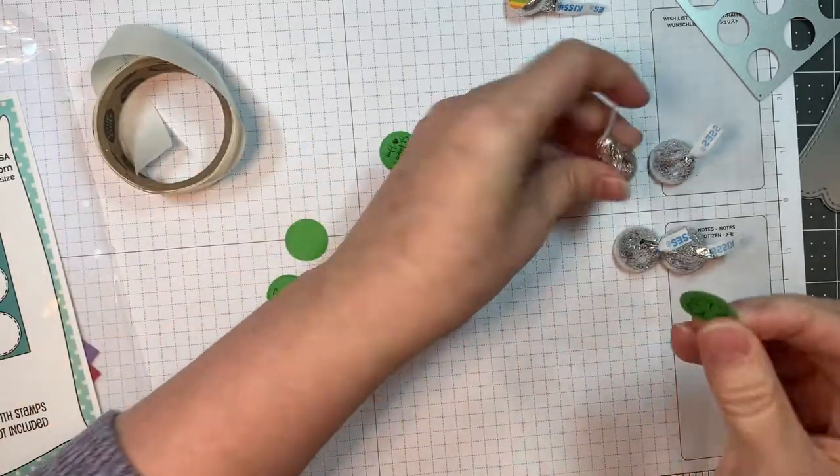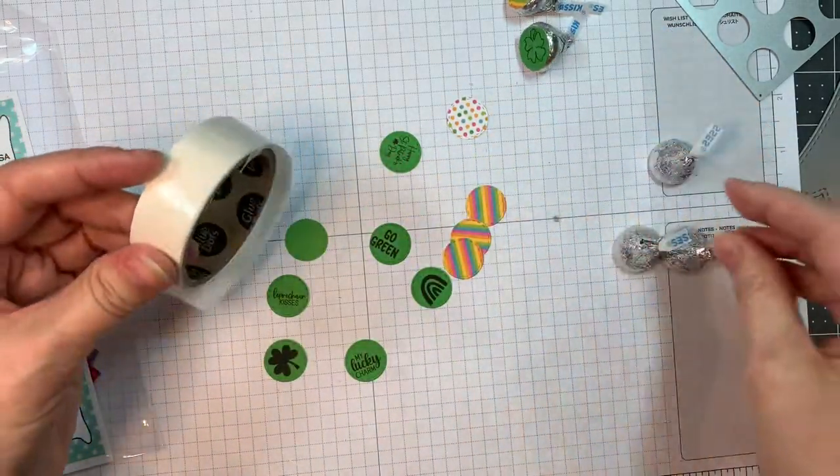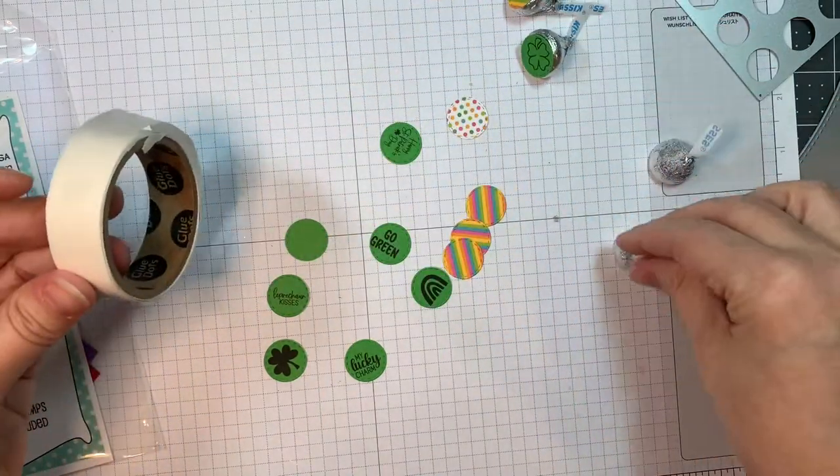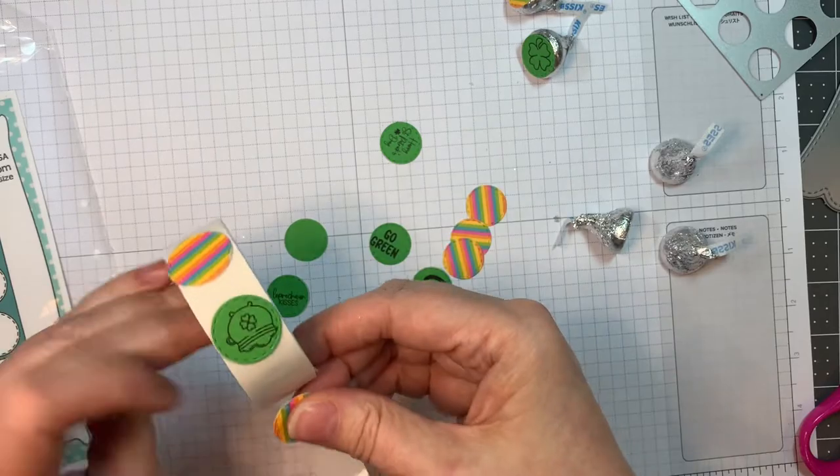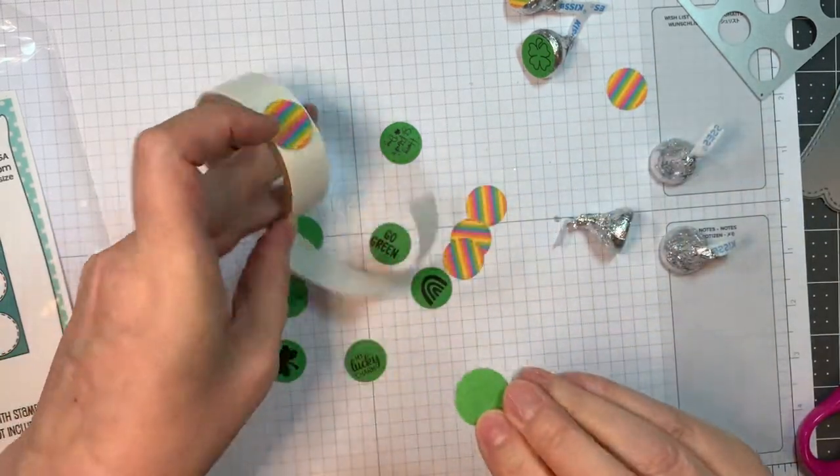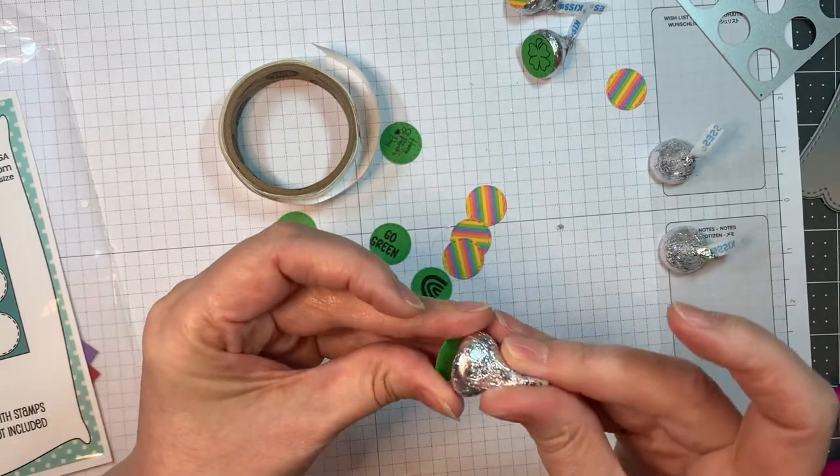You can actually use them for sentiments on cards too, which is fun, and it's got great little stitching detail. You can decorate any candy with these, and like I said, you can use patterned paper. Basically, I just pop them onto each Hershey kiss.